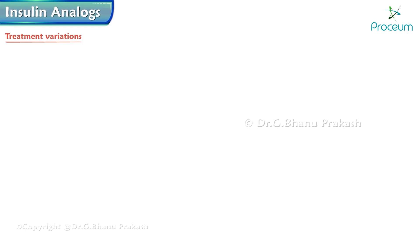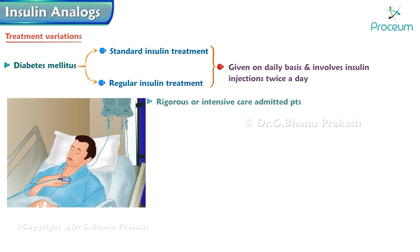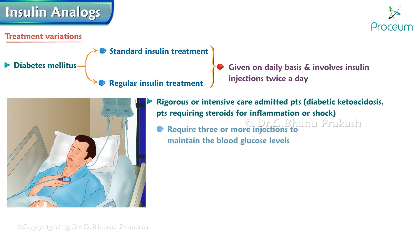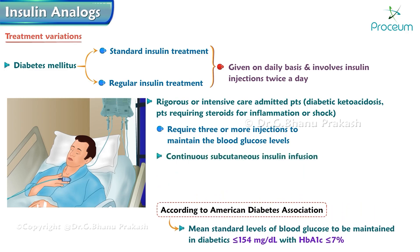Treatment variations — standard treatment of diabetes mellitus involves insulin injections twice a day. Patients requiring intensive care, admitted patients, those with diabetic ketoacidosis, or patients requiring steroids for inflammation or shock require three or more injections per day to maintain blood glucose levels. Standard target blood glucose levels in diabetics are less than or equal to 154 mg/dL with an HbA1c less than or equal to 7% according to the American Diabetes Association.